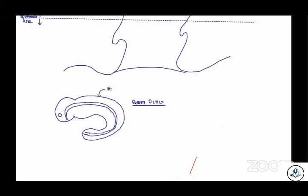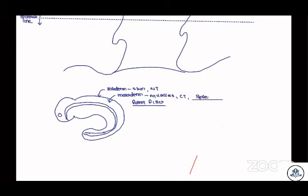What does the ectoderm give rise to? Skin, and one very important structure — the nervous system. Never forget that. The mesoderm is inner to that. What does the mesoderm give rise to? Muscles, connective tissues, and importantly, the spleen. The spleen is a derivative of the mesoderm.